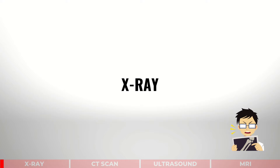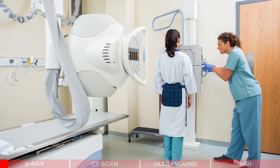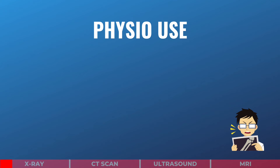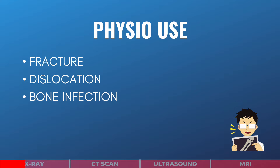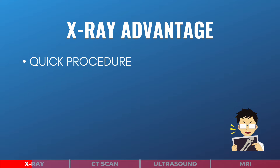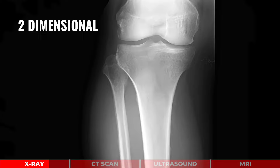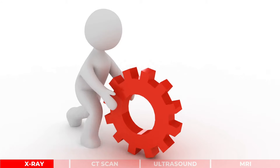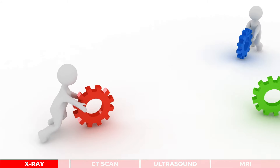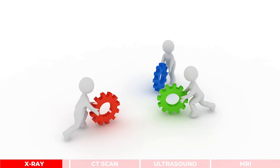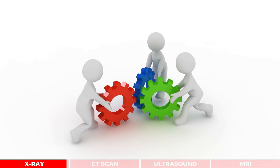X-ray is a form of radiation that penetrates the body to produce an image. Physiotherapists commonly use X-ray to evaluate a possible fracture, dislocation, and bone infection. X-ray has many benefits: it can be performed quickly, and they are readily available and cost-effective. The main limitation of X-ray is it produces a two-dimensional image of a three-dimensional object, so a minimum of two different views are often required to evaluate the site of injury.